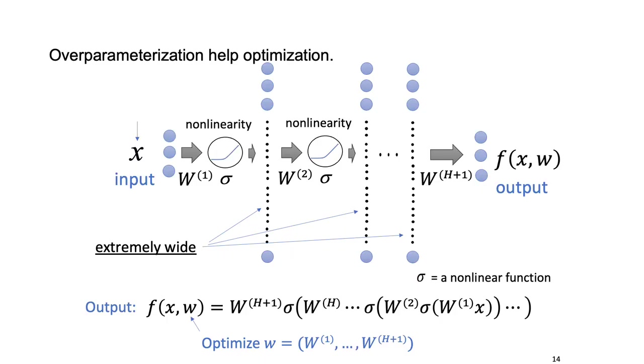How can we get a better landscape and get a decent optimization guarantee? In the past research, people discovered that overparameterization helps optimization.